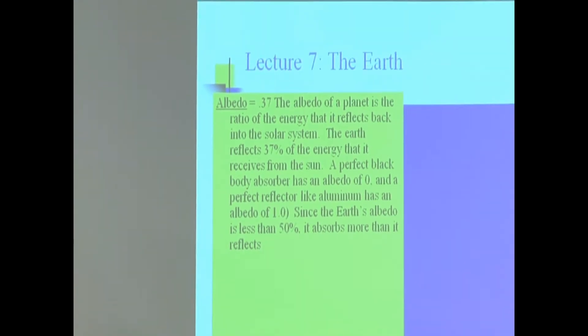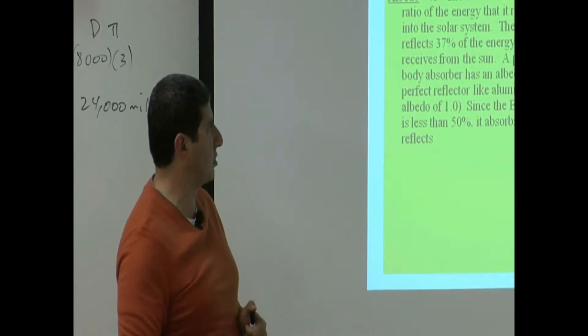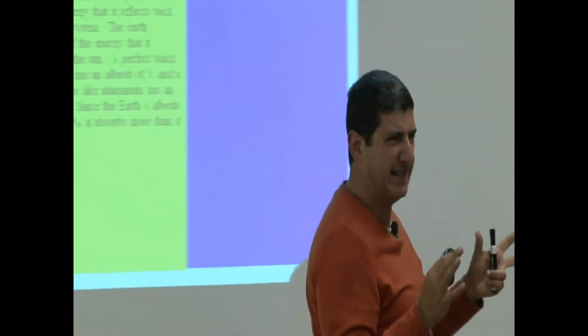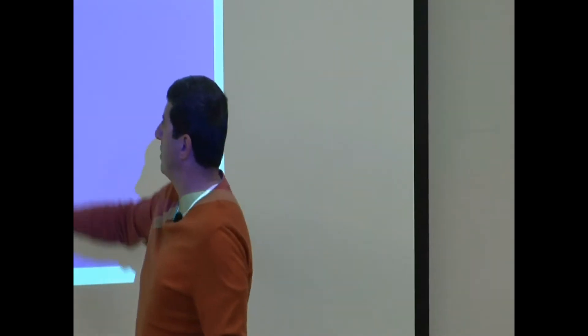A perfect black body absorber has an albedo of 0. So if the Earth was like black, very, very black body, then it would absorb most of the energy coming from the sun, 100%. It would not reflect anything back. So it would have albedo of 0.